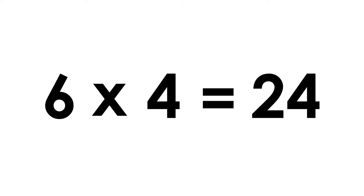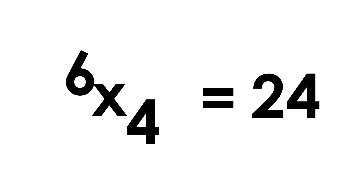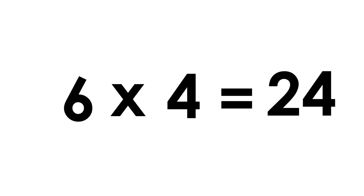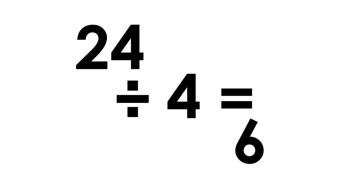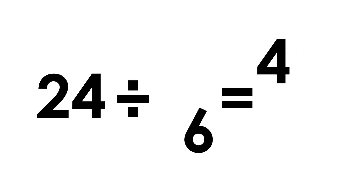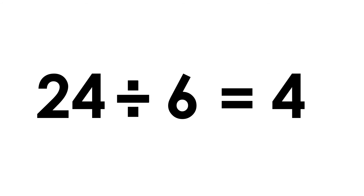Six fours are twenty four. Four sixes are twenty four. Twenty four divided by four is six. Twenty four divided by six is four.